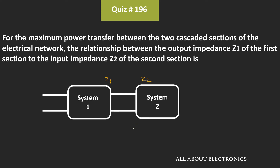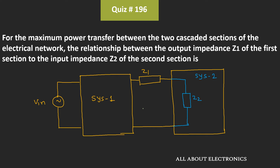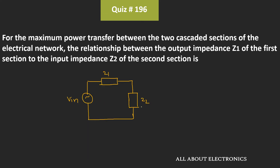If we look at the equivalent circuit, the output impedance of the first system is Z1 while the input impedance of the second system is Z2. Maximum power will be transferred from the first section to the second section whenever Z2 is the complex conjugate of Z1 — that is, Z2 equals Z1 star.